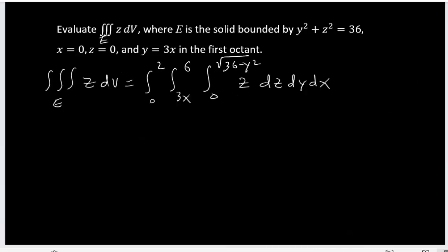Okay, so we clean the screen. Now let us do the integral. We have 0 to 2, 3x to 6. The integration of z will be one half z squared, limit goes from 0 to the square root of 36 minus y squared. Then we have dy dx.